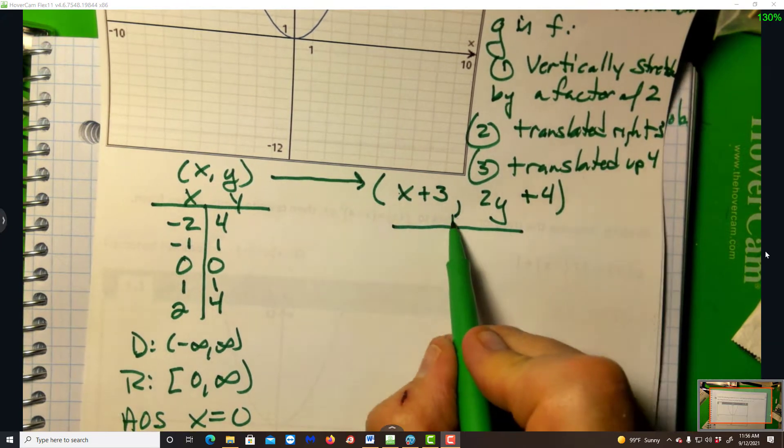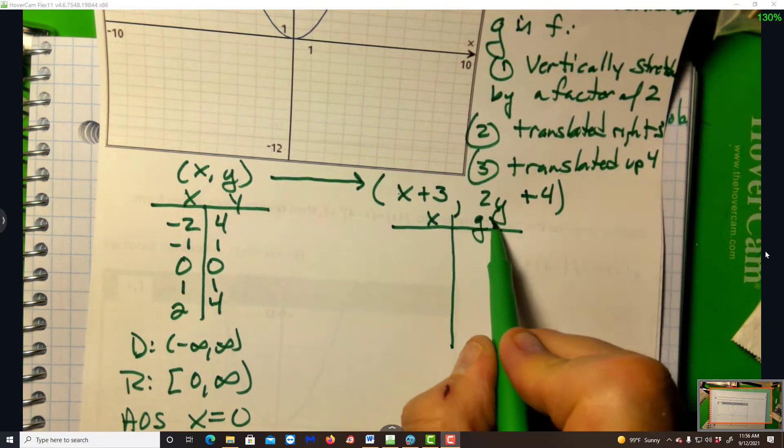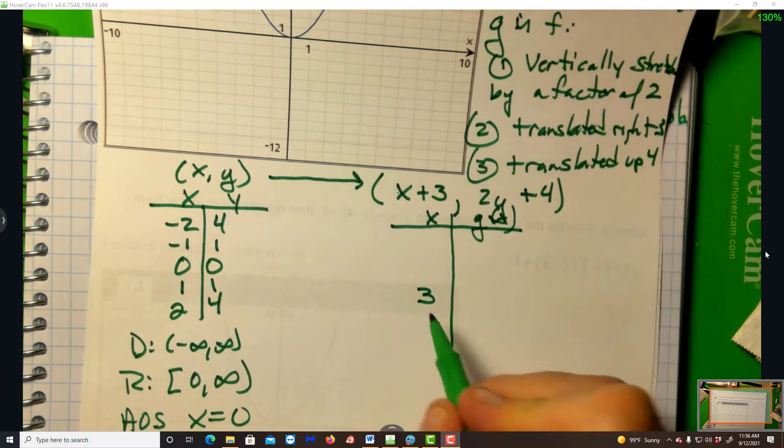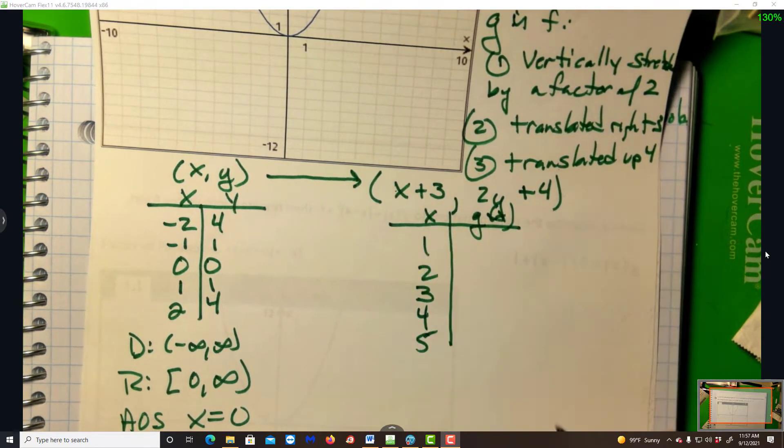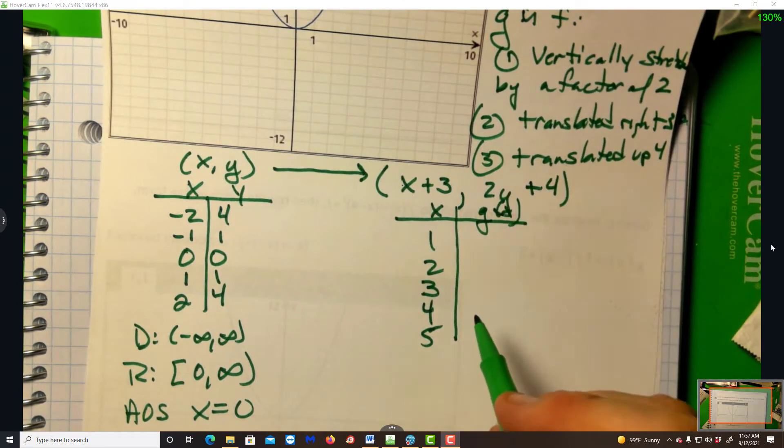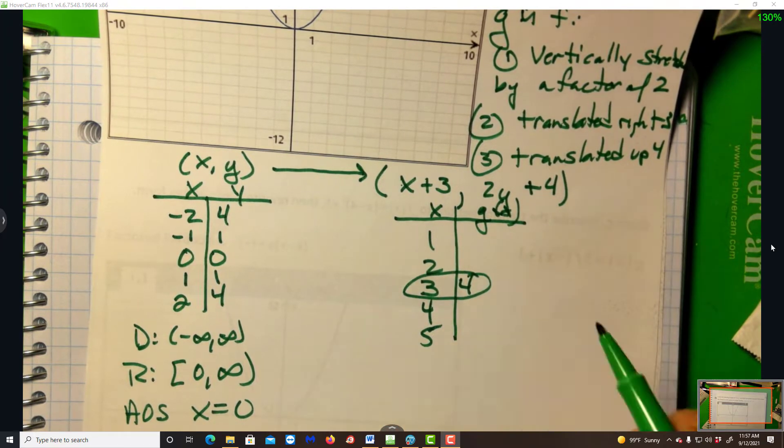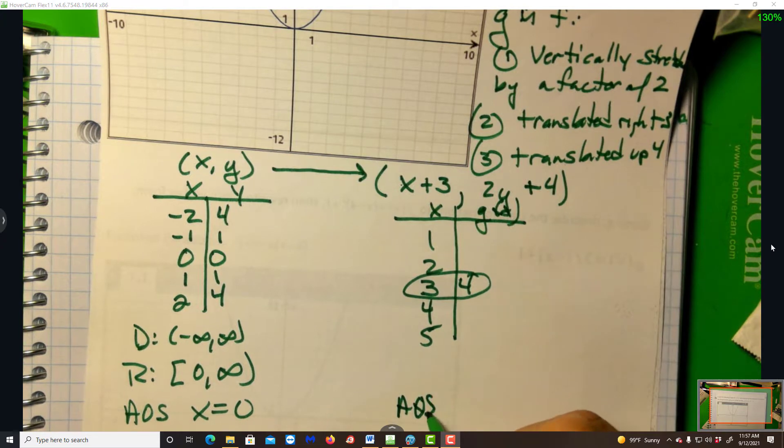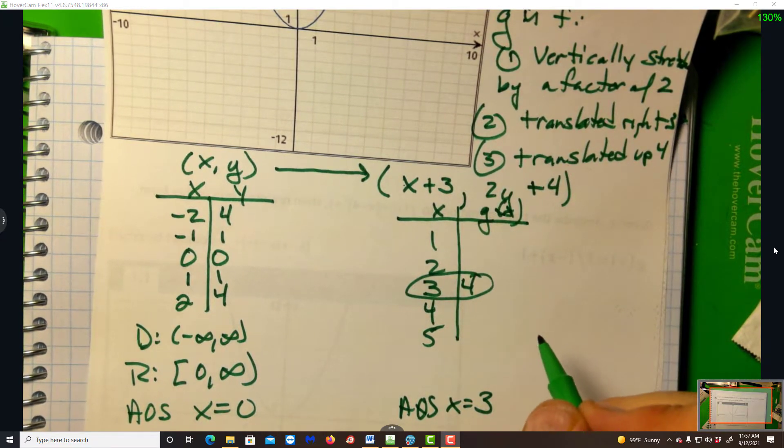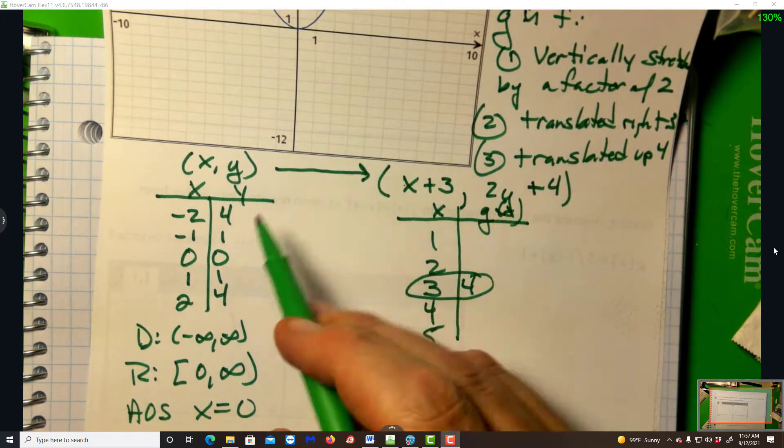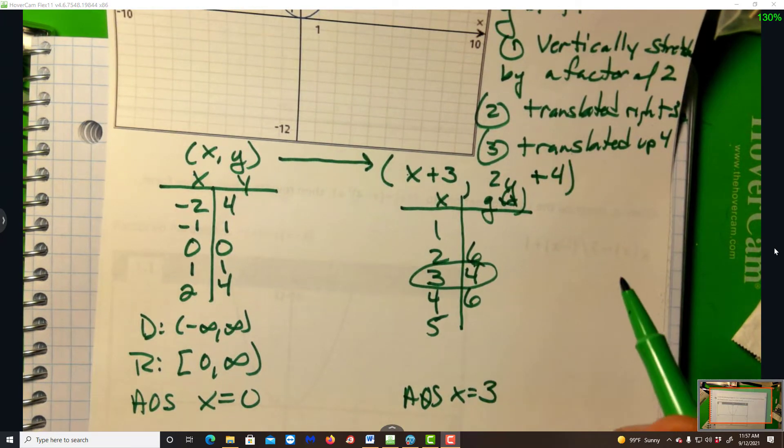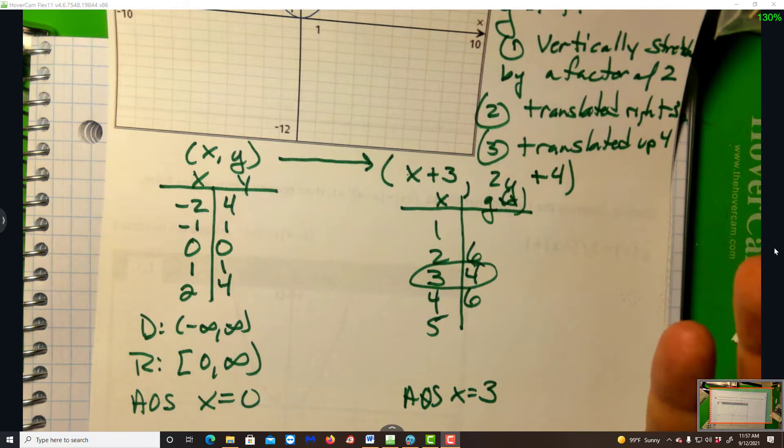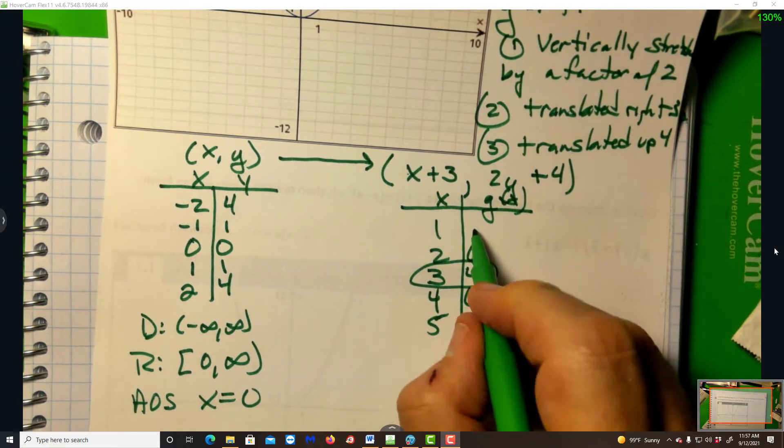Now we take an ordered pair and our mapping. For the y's, we vertically stretch them by 2, and then we're going to add 4 to go up 4. For the x's, to go right 3, we add 3. So if you think about this, 0 plus 3 is 3. 2 times nothing is nothing, you add 4, so 3, 4 is the vertex.